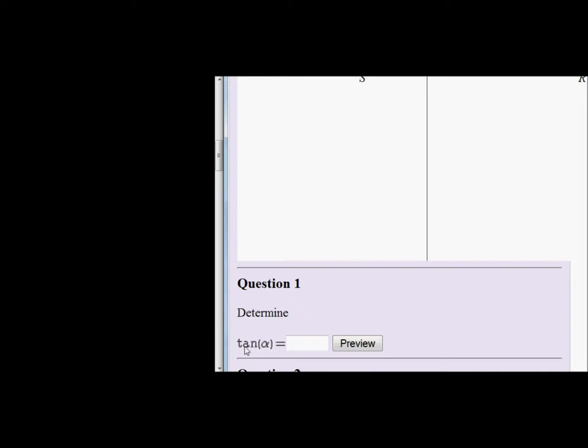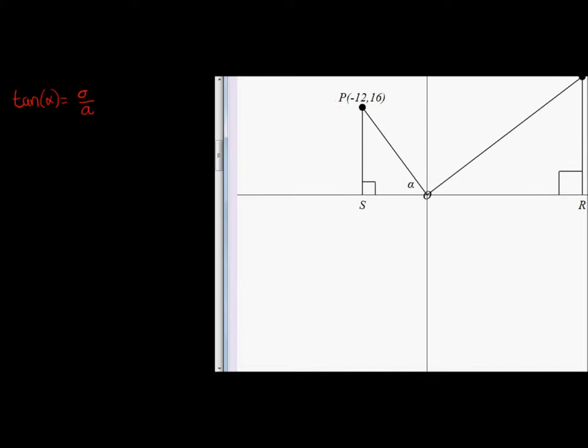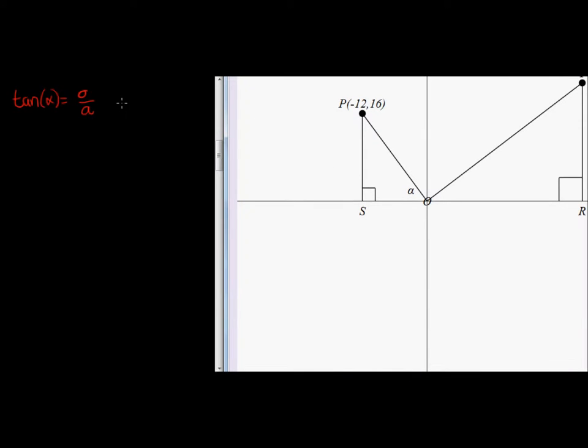The first question asks to calculate tan of alpha. Now what we do know about tan is that tan of alpha equals the opposite divided by the adjacent. So do we have that information? Well, if we look at the sketch, we have a triangle there.